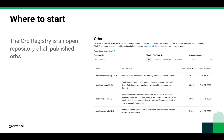There are three categories for orbs on the registry: Certified, Partner, and Community. Certified orbs are written and tested by the CircleCI team. Partner orbs are written by our technology partners, and Community orbs are, you guessed it, written by the community.